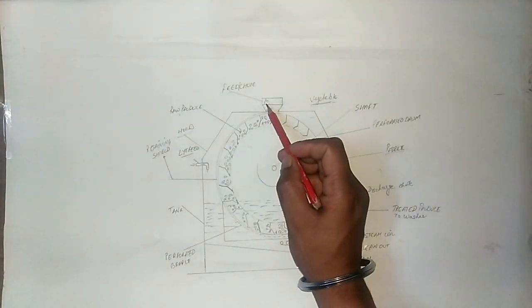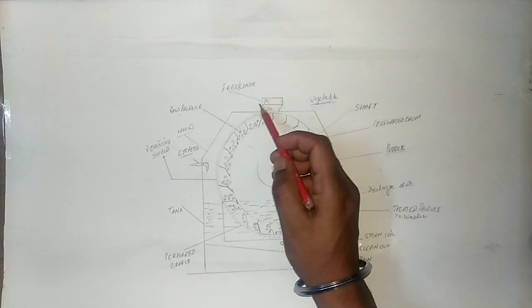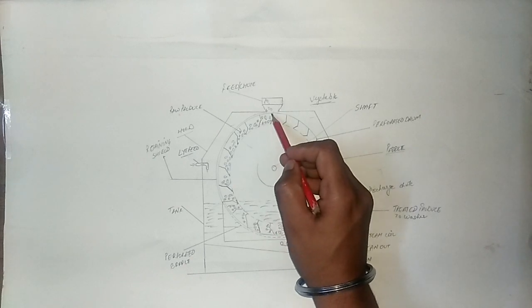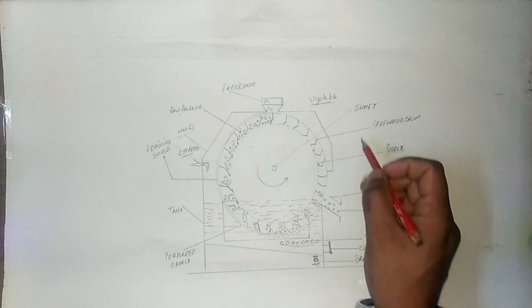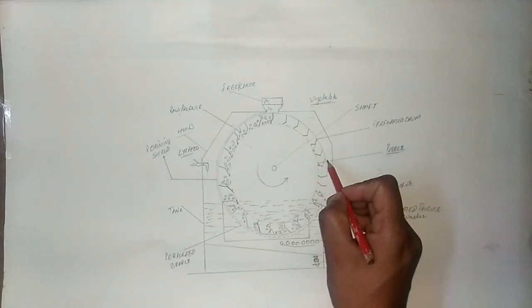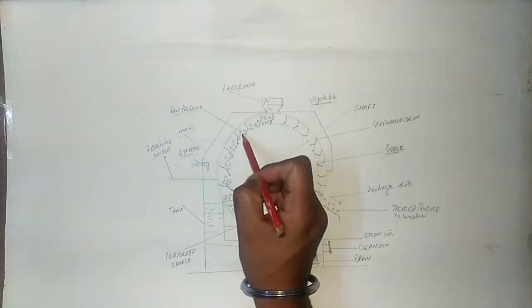We have feed hoppers, feed section, this is the paddle. Here is the paddle, here is the food material, here is the raw production.